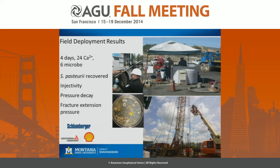We were on site for a week, and for four days we injected 24 calcium pulses and six microbial pulses. We were only able to collect three fluid samples because every time we switched to sampling we had to lay down the delivery baler, which took significant time. We collected one sample at the beginning, one in the middle, and one at the end. One positive finding was that we recovered our injected microorganism — on the microbial plate, the tan colonies are the Sporosarcina pasteurii organisms, showing they had survived competition with other subsurface microbes and remained active.